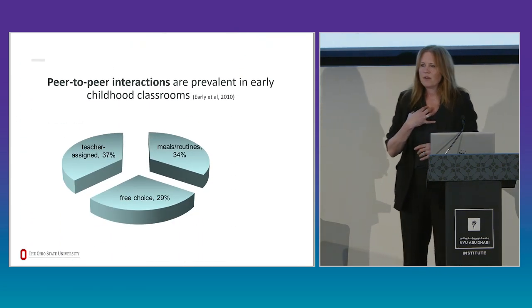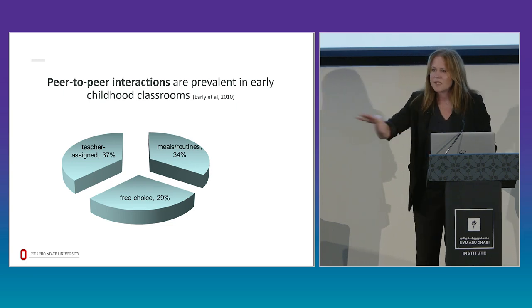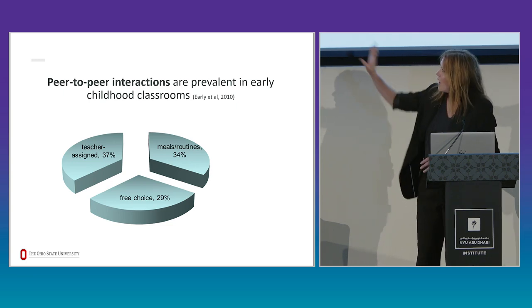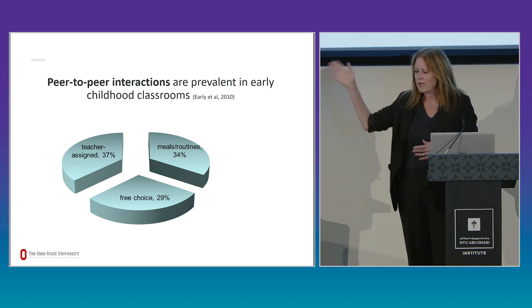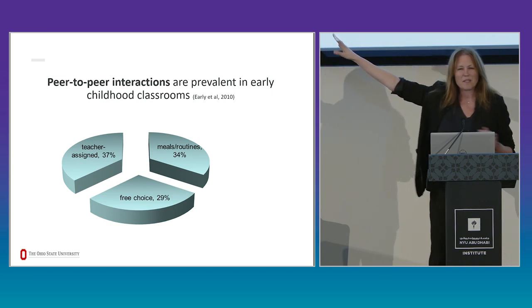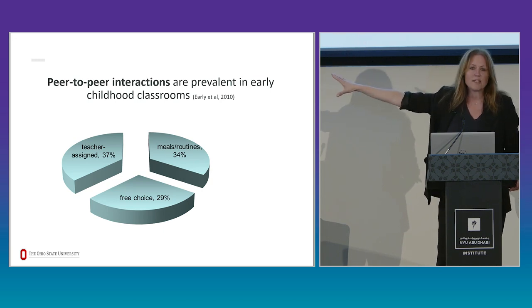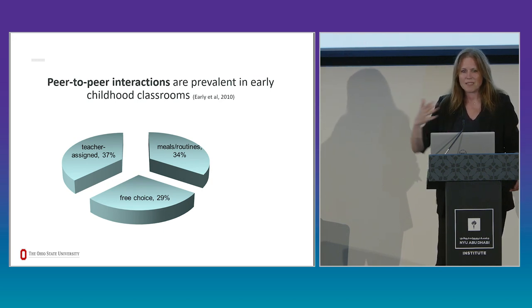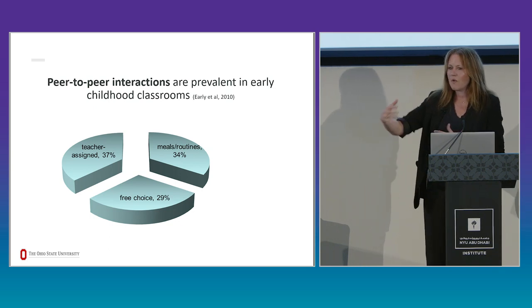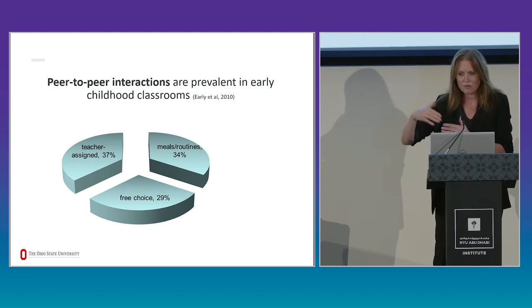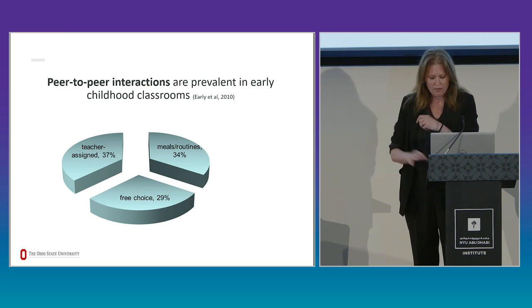I'm interested in peer effects in early childhood because in preschool classrooms, kids spend a lot of time with other children. One large study in the United States found that 34% of preschool time is in meals and routines, with nothing teacher-led, and free choice. About 60 to 65% of the time, kids are roaming around in little peer groups. So we should ask: for a preschool kid, how much are they being shaped by the characteristics of the other kids they're interacting with?